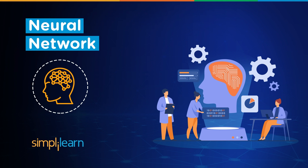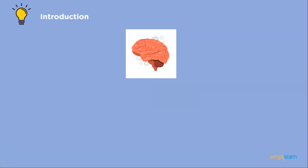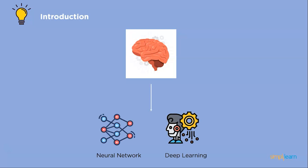The brain controls and coordinates everything we do. What if we can create an artificial brain that works like a human? The technology behind all this is neural networks and deep learning. After watching this video, you will better understand the critical fundamentals of neural networks.